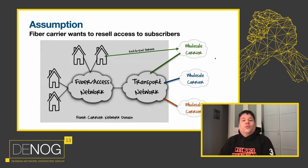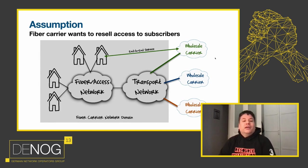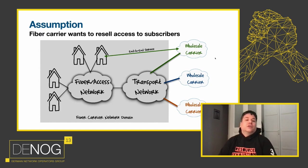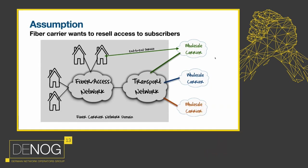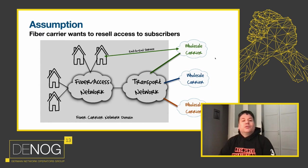One of the main assumptions I'm making here is that I'm looking at a two-tier network — a fiber carrier network. The domain of the fiber carrier is the access network where the subscribers are connected and the transport network. Then we have wholesale carriers — service providers like Telefónica, Deutsche Telekom, Vodafone — who provide the end-to-end service over the fiber carrier's network. Keep this in mind, because this is the base of most things I'm talking about here.